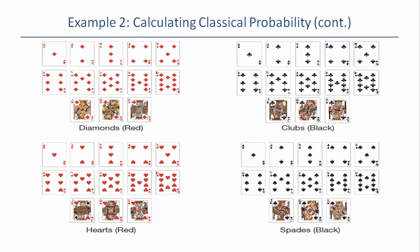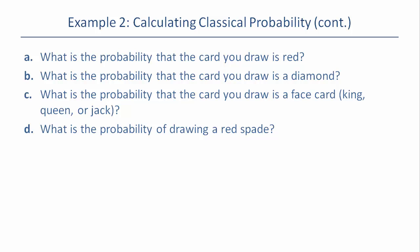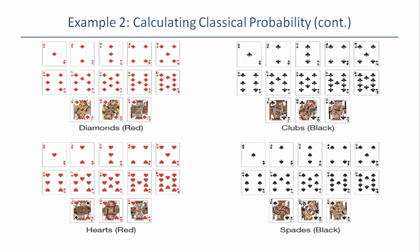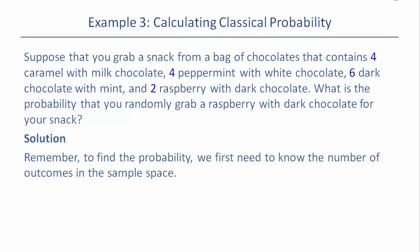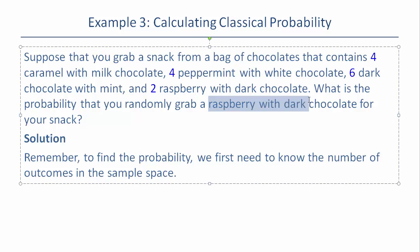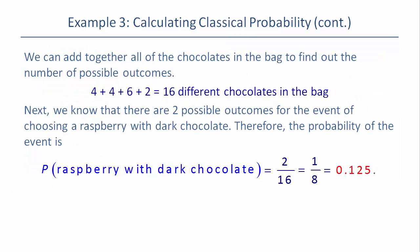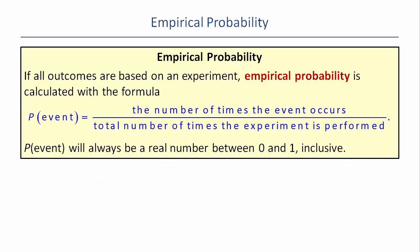The probability of drawing a red spade is zero because spades are black — red spades are impossible. For another example: a bag of chocolates has 4 caramel milk chocolate, 4 peppermint white chocolate, 6 dark chocolate mint, and 2 raspberry dark chocolate. The probability of grabbing a raspberry dark chocolate is 2 out of 16 total, which reduces to one-eighth, or 0.125.